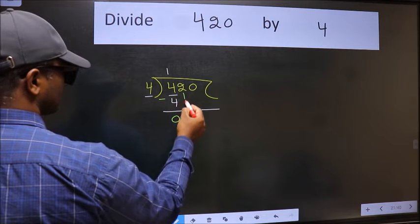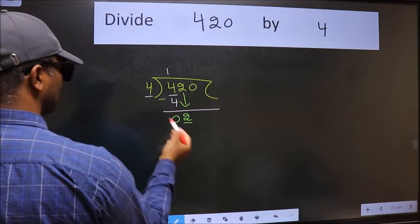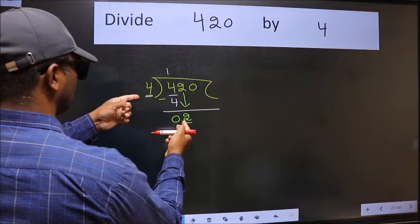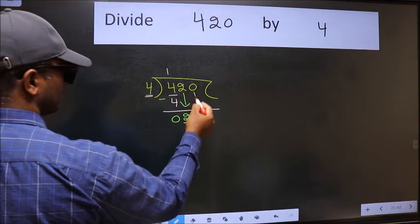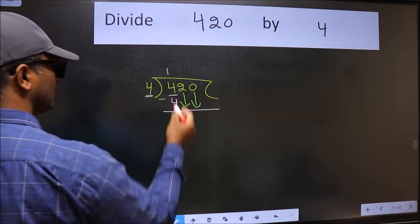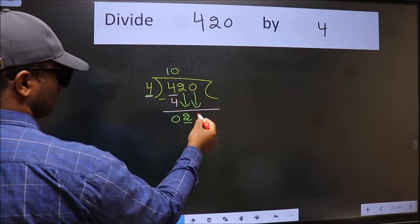After this, bring down the beside number. So 2 down. Now here we have 2 and here 4. 2 is smaller than 4. So we should bring down the second number. And the rule to bring down second number is, we should put 0 here. Then only we can bring this number down.